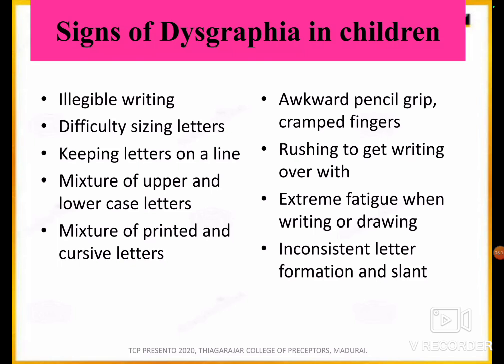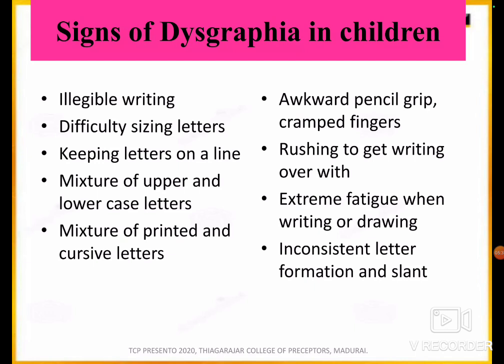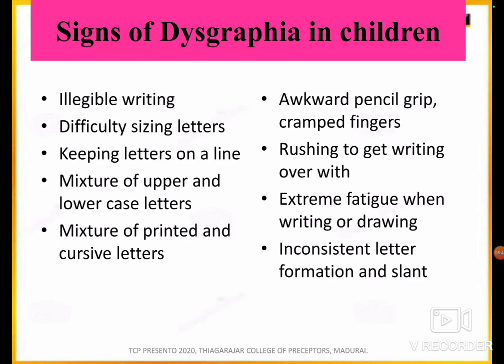When there is dysgraphia among children, you can identify it by: illegible writing, difficulty sizing letters consistently, inability to keep letters on a line, a mixture of upper and lowercase letters, a mixture of printed and cursive writing, awkward pencil grip with cramped fingers, rushing to get writing over with, extreme fatigue while writing, and inconsistent letter formation and slant.